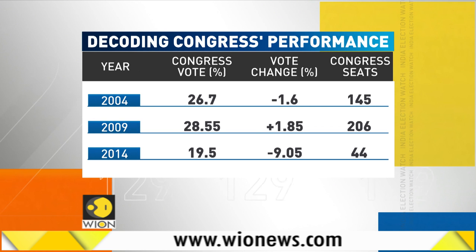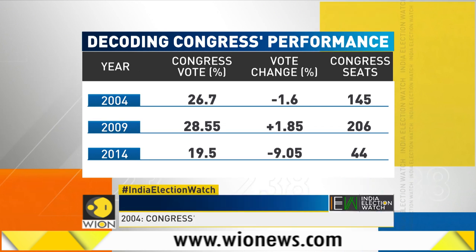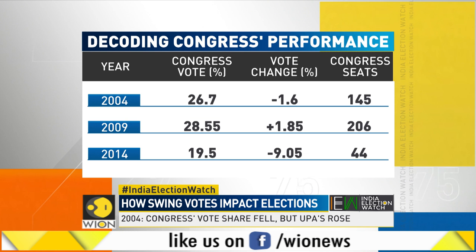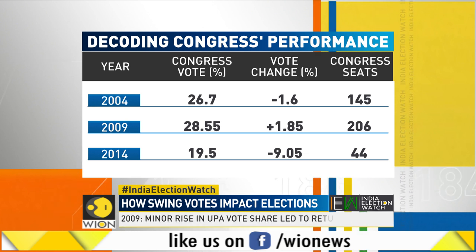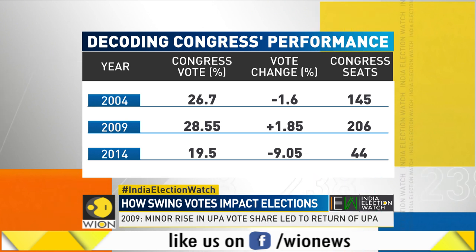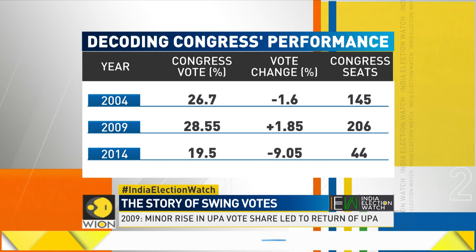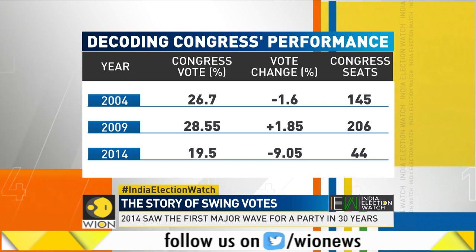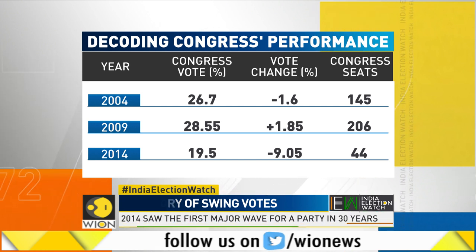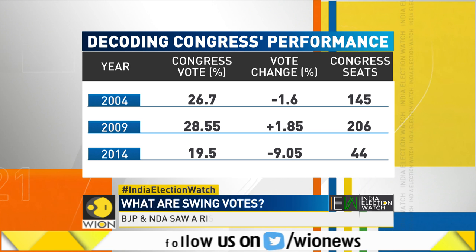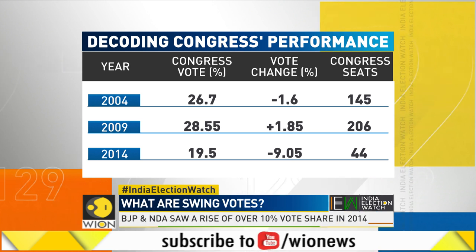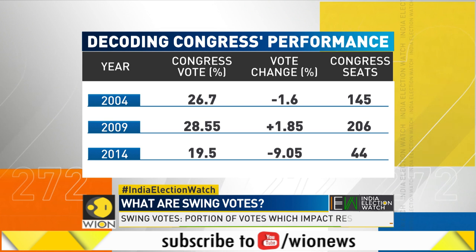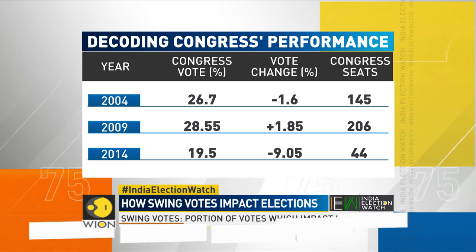In 2004, Congress' vote share decreased by 1.6%, but it got 145 seats and was the single largest party — it formed a coalition government. In 2009, a mere 2% positive vote swing helped the Congress Party increase its seat share to 206, and the UPA2 government ruled for five years.